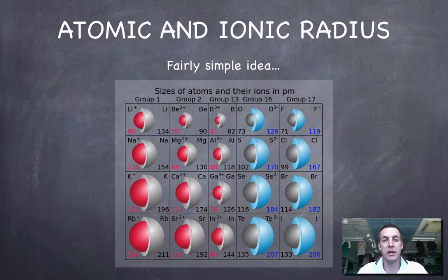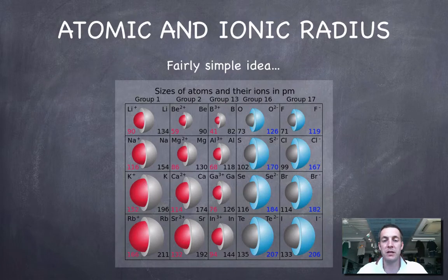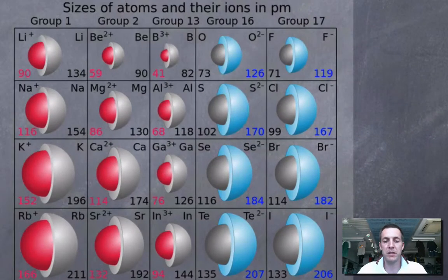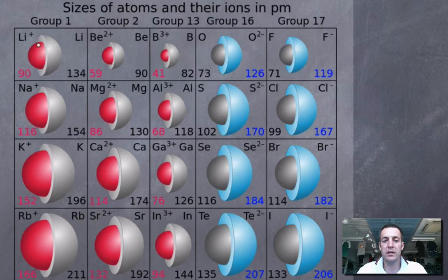Before we try and explain how these patterns vary, we'll have a look at what we mean by these terms. Now if we treat an atom as a sphere, then the radius of that sphere will be the atomic radius. If you look at this picture here, all the grey spheres, which have been cut away in some cases, they are the atoms, all the red spheres here are positive ions, and all the blue spheres here are negative ions.